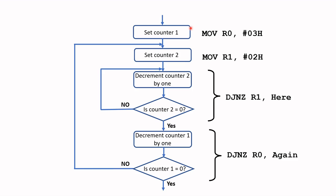Let's go over the time delay subroutine one more time using a flowchart. The entry point sets counter one in R0 to 0x03 and counter two in R1 to 0x02. The next instruction decrements counter two (R1) by one — this is carried out by DJNZ R1. If counter two is not zero, repeat; we stay in this inner loop until R1 equals zero.